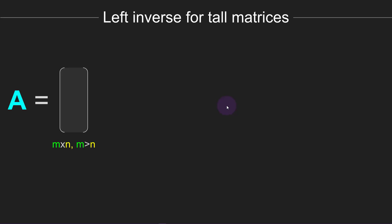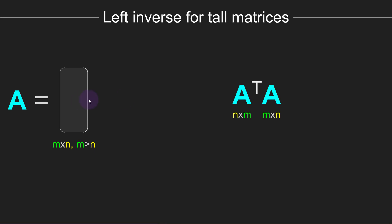Let's start with a tall matrix, meaning it has more rows than columns — m is greater than n. This matrix definitely does not have an inverse. However, with a bit of creativity, we can come up with a way to multiply this matrix to produce the identity matrix. Although matrix A is not invertible because it's not square, A transpose A is a square matrix. And A transpose A can have an inverse if it's full rank — it will be n by n.